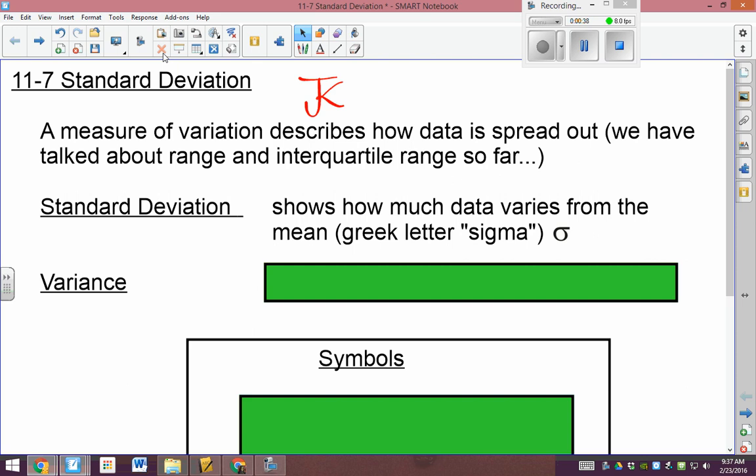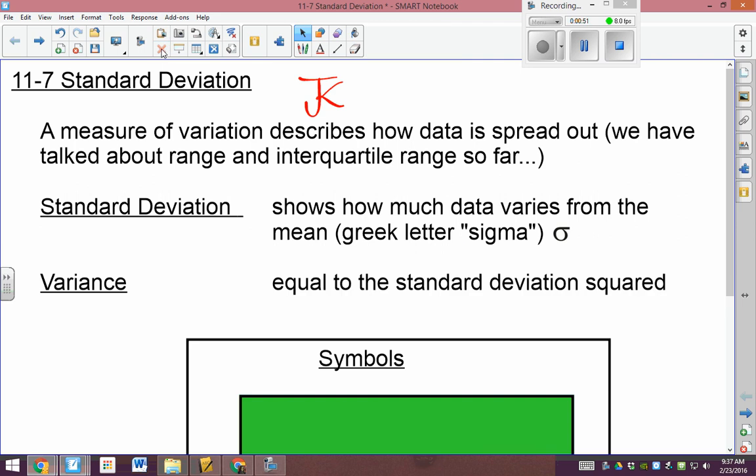Standard deviation shows how much the data varies from the mean. The symbol that we use for that is the lowercase Greek letter sigma. The variance, that's another measure of variation. It's equal to the standard deviation squared. So when you're looking at symbols, that would be sigma squared.